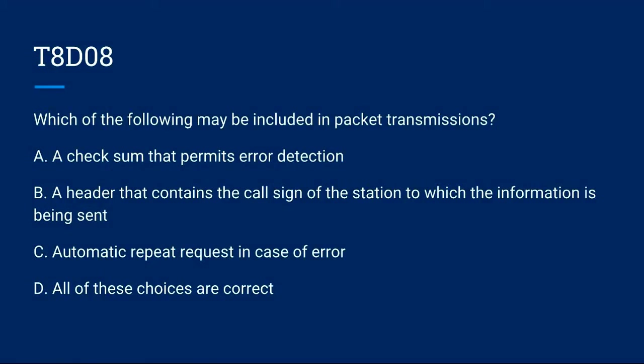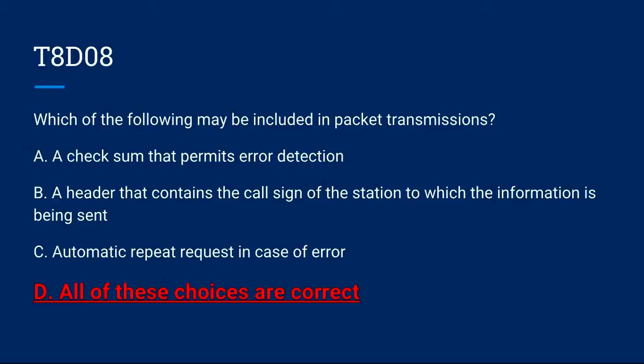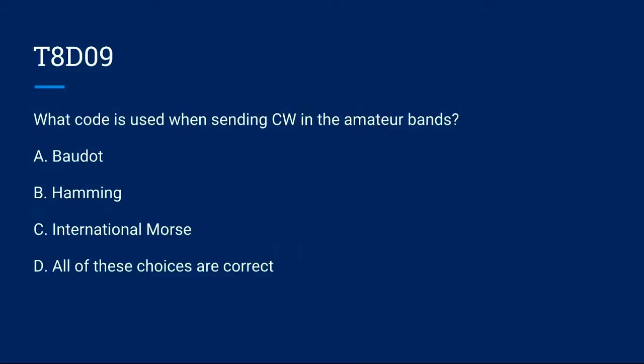T8D08: Which of the following may be included in packet transmissions? A. A checksum that permits error detection. B. A header that contains the call sign of the station to which the information is being sent. C. An automatic repeat request in case of error. Or D. All of these choices are correct. The correct answer is D: all of these choices are correct.